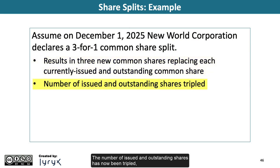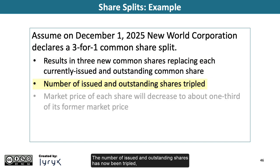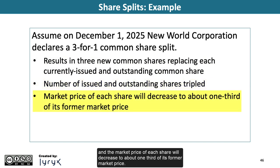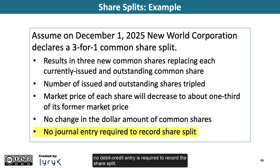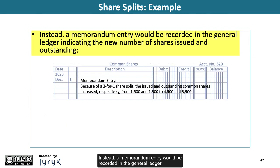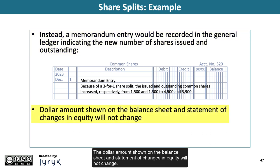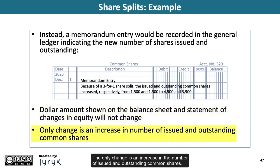The number of issued and outstanding shares has now been tripled, and the market price of each share will decrease to about one-third of its former market price. Since there is no change in the dollar amount of common shares, no debit-credit entry is required to record the share split. Instead, a memorandum entry would be recorded in the general ledger indicating the new number of shares issued and outstanding. The dollar amount shown on the balance sheet and statement of changes in equity will not change.